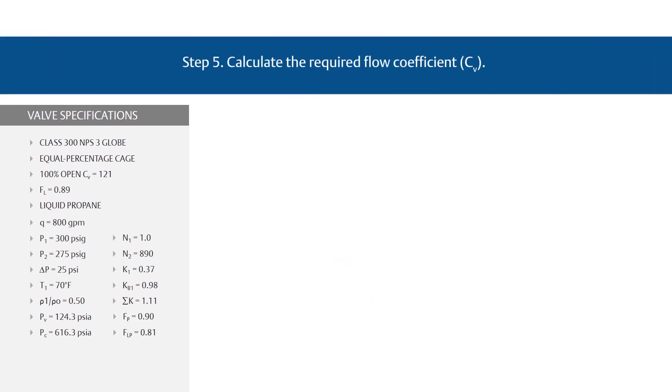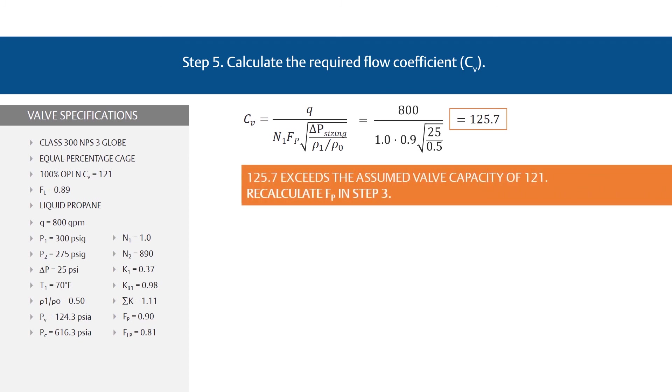Finally, for step 5, calculate the required flow coefficient, or CV. Use the standard equation for CV. Plug in the variables for a result of 125.7. The required CV of 125.7 exceeds the capacity of the assumed valve, which has a CV of 121.